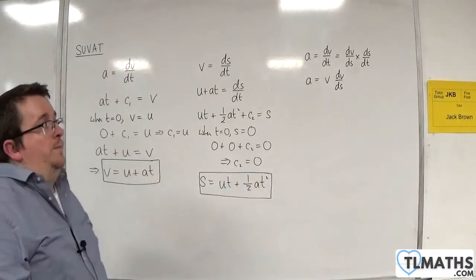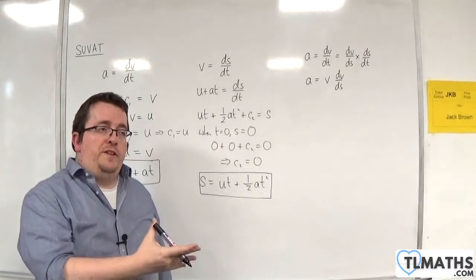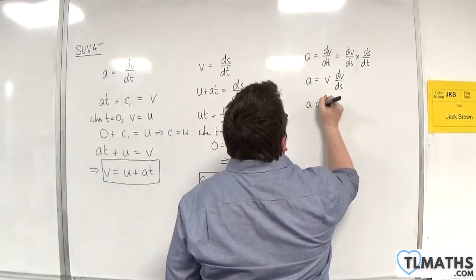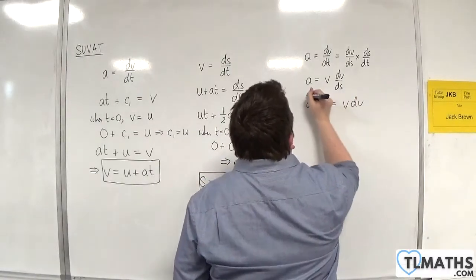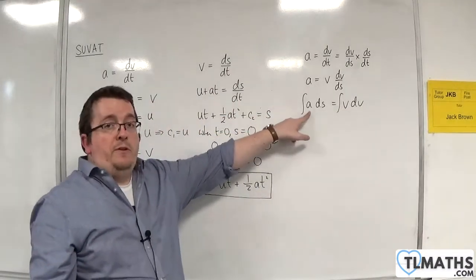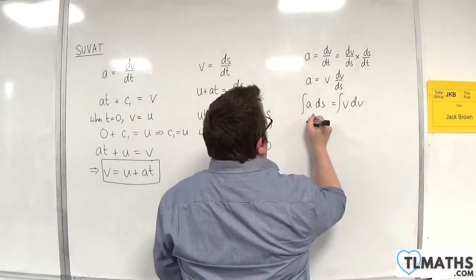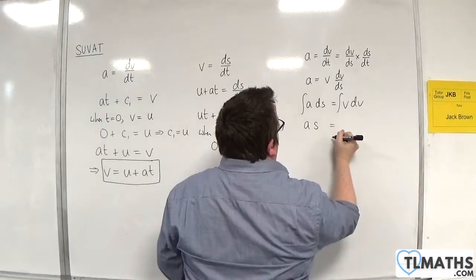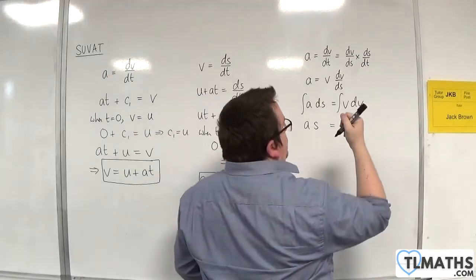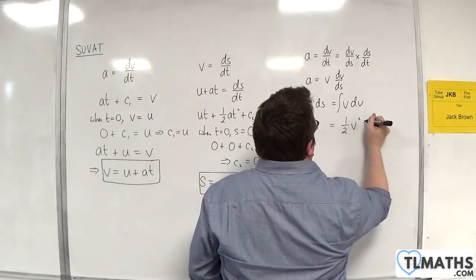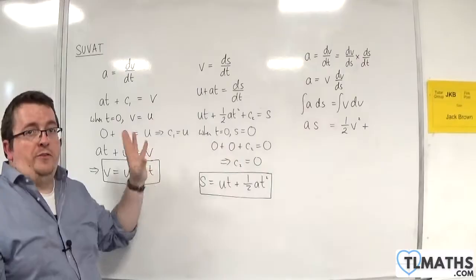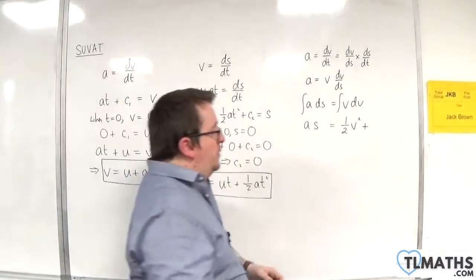So I'll solve the differential equation by separation of variables. I'll multiply both sides by ds, keep dv where it is, and then integrate both sides. Now a here, remember, is a constant, so that integrates to just a times s. On the right-hand side we're integrating v with respect to v, so we add 1 to the power and divide by the new power to get ½v², plus a constant of integration c3. Remember, we don't add a constant on both sides — we traditionally add it onto the right-hand side.